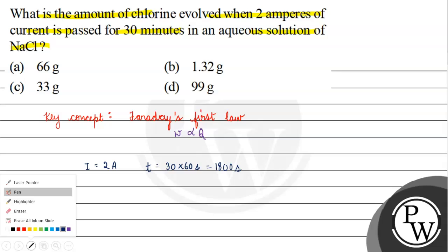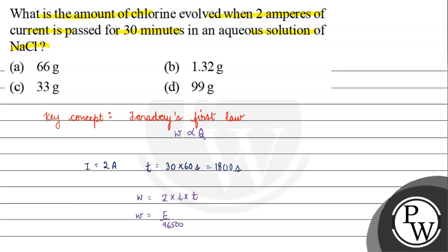And now we want to remove the amount of chlorine. How will we remove the amount of chlorine? W will be equal to Z into I into T. So what is Z we have? It is basically E by 96,500 into I into T.